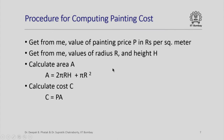Sadly, the answer is no. Let us examine why. Let us go through these steps again. Get from me the value of painting price — alright, so the person executing this procedure will collect the value P from me. Next, the procedure says get from me values of radius r and height h — again the person will collect those values. The next instruction says calculate area A = 2πrh + πr². The person will do the multiplication of πr², the multiplication of 2×π×r×h, add both values, and assign the result to the symbol A on the left-hand side of the equals sign. So we have got the value of area A.